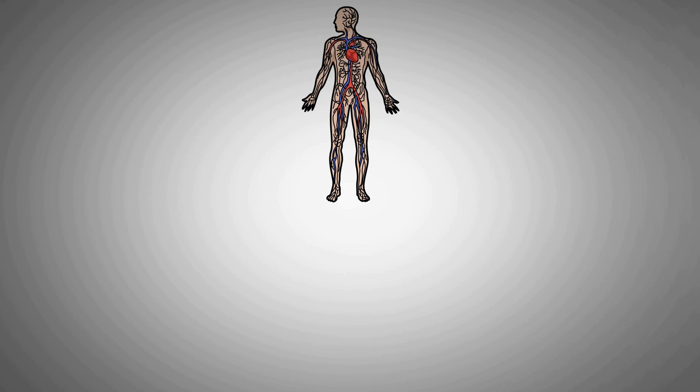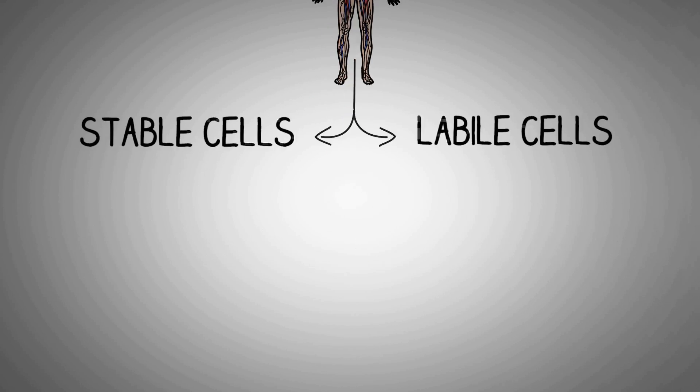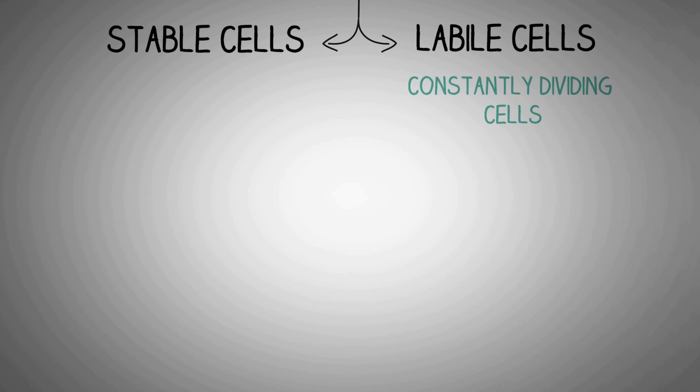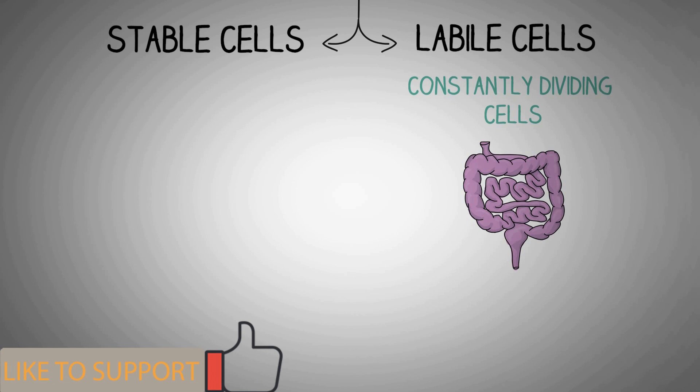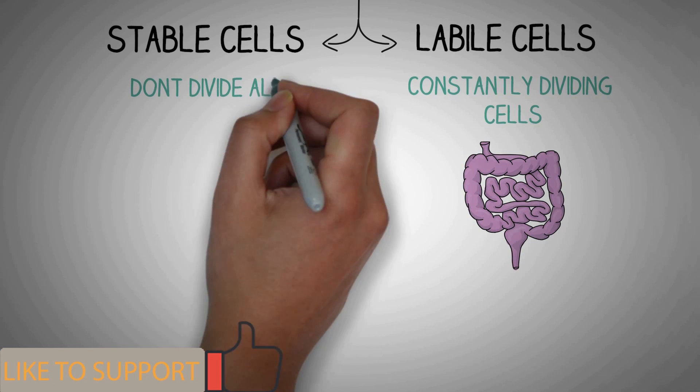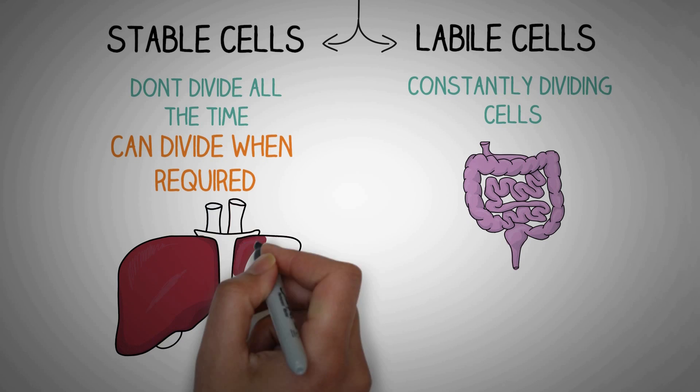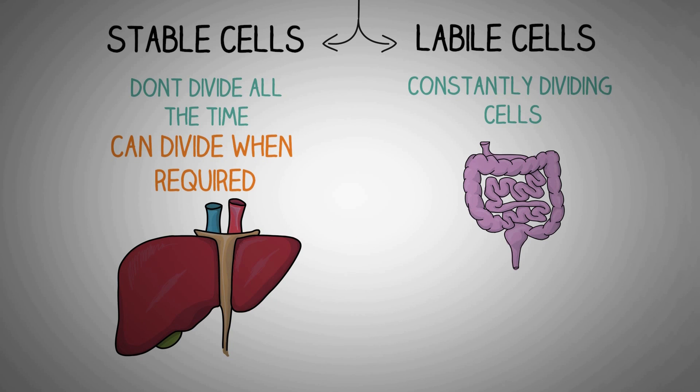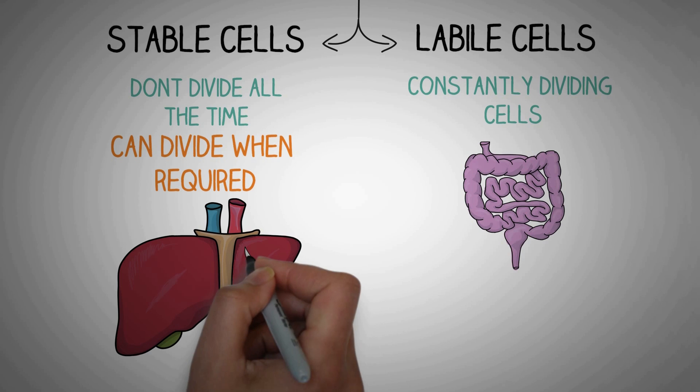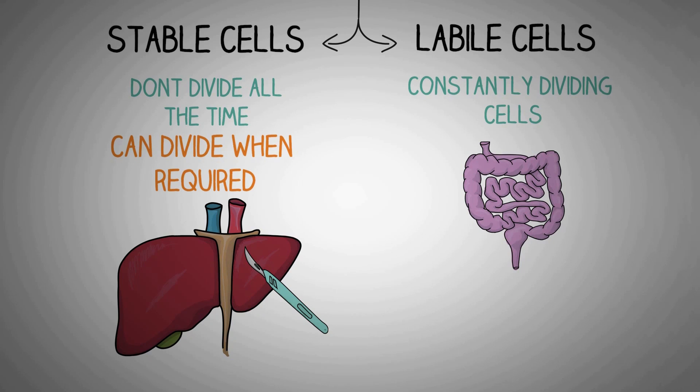Leaving them aside, if we talk about the rest of the body cells, they can be categorized into two types: stable cells and labile cells. Labile cells include cells which are constantly dividing, like that present in our GIT, like mouth, intestines, etc. Stable cells don't divide all the time but when required they can. Like a liver regenerates when half of it is surgically removed for organ donation. So liver cells or hepatocytes are a good example of stable cells.